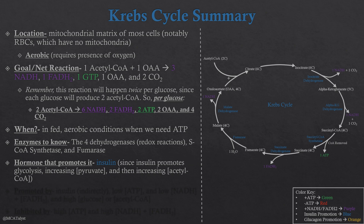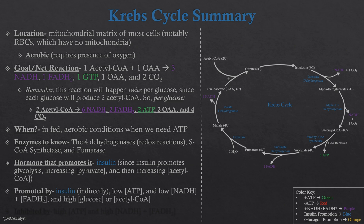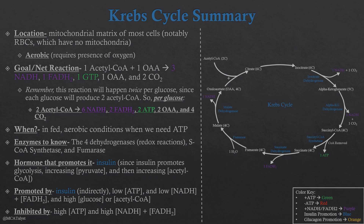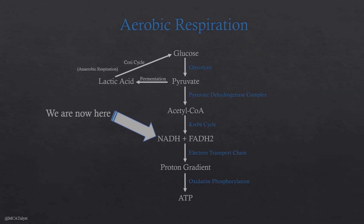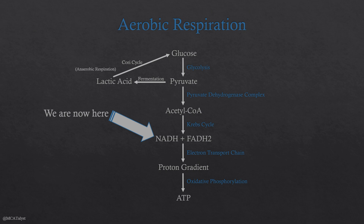The conditions promoting the Krebs cycle: insulin release, low ATP, low electron carriers, and high glucose or acetyl-CoA. It is inhibited by high ATP and high electron carriers. Key enzymes: the four dehydrogenases catalyze the redox reactions producing electron carriers; succinyl-CoA synthetase directly produces ATP; and fumarase is the unique one involving water when forming malate — remember M upside down is W for water. That's the Krebs cycle — it follows the pyruvate dehydrogenase complex in aerobic respiration and leads to the electron transport chain next.